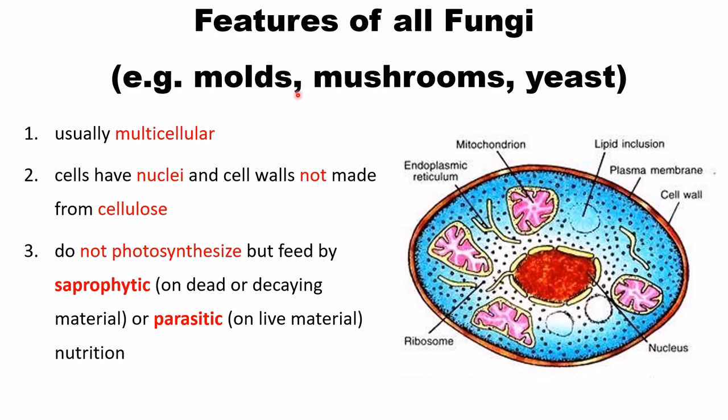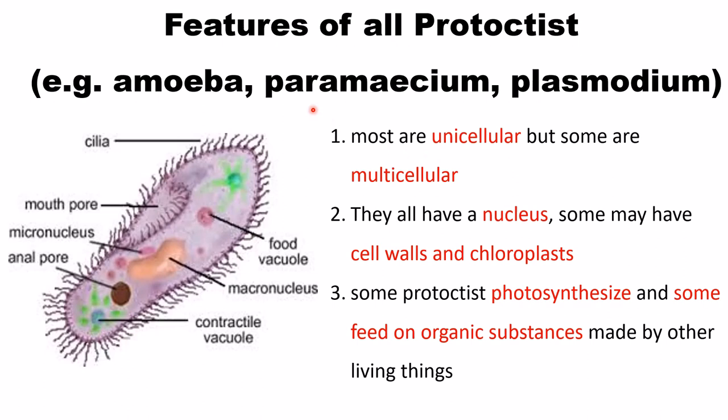The main features of fungi — examples include molds, mushrooms, and yeast. Fungi are usually multicellular; cells have nuclei and cell walls not made of cellulose but made of chitin. They do not photosynthesize. There are two important feeding modes: saprophytic (feeding on dead material) and parasitic (taking nutrients from living organisms).